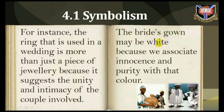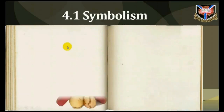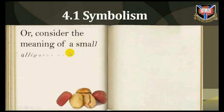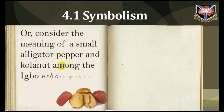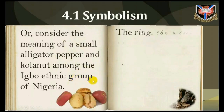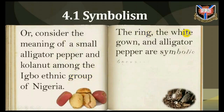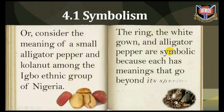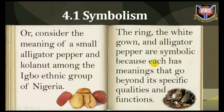The bride's gown may be white because it associates innocence and purity with that woman. Or consider the meaning of the alligator pepper and golden knot among the Igbo ethnic group of Nigeria. The ring, the white gown, and alligator pepper are symbolic because each has meanings that go beyond its specific qualities and functions.